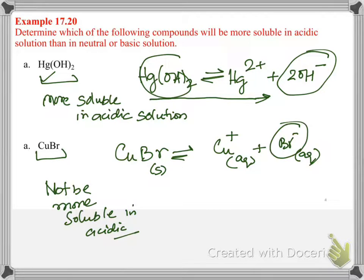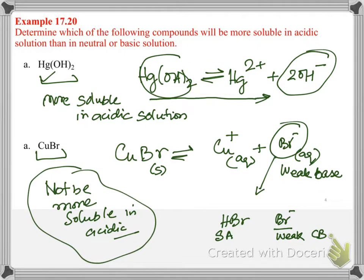Because here, your basic anion, bromide ion, is a weak base. It's a weak base and it will not react much with the H plus or hydronium ions present in the solution. Now, why is this bromide a weak base? Then think about what is its corresponding acid, HBr. Because Br negative is a conjugate base of a strong acid. And so, the strong acids produce very weak conjugate bases. So that's why it will not be very soluble in acidic solution.